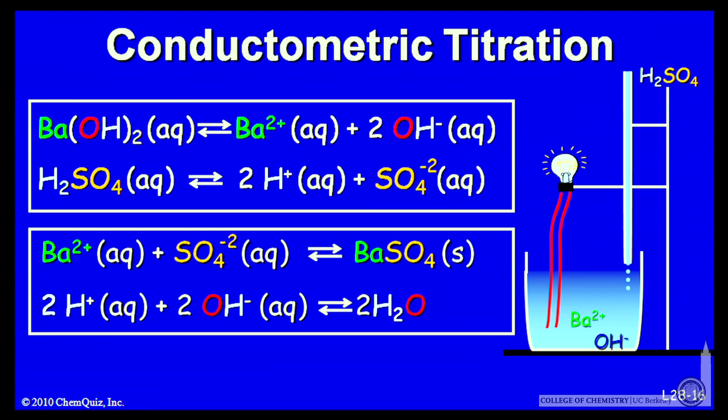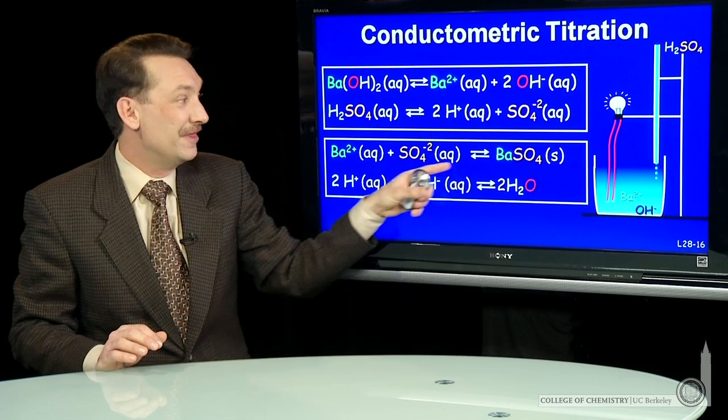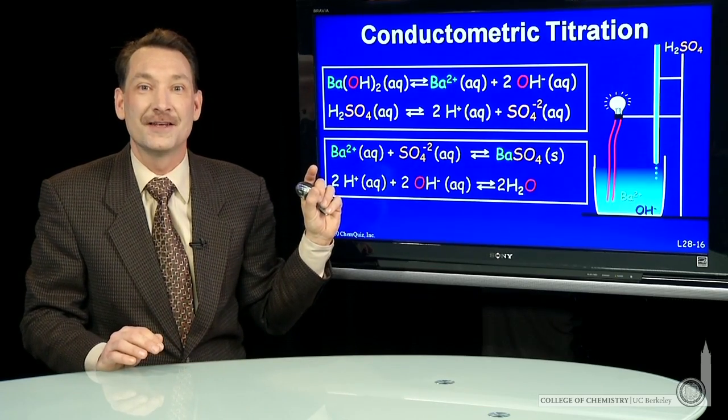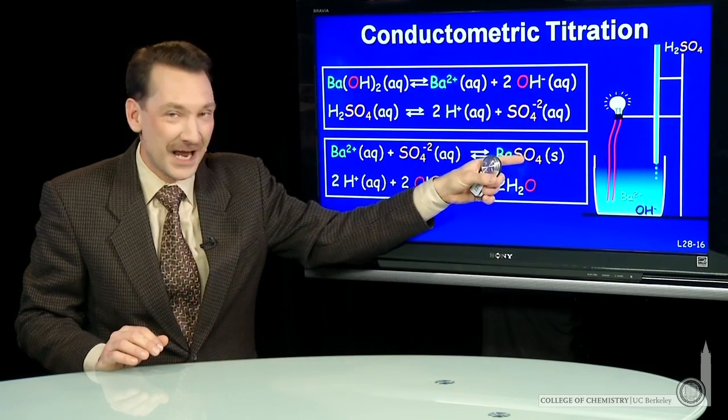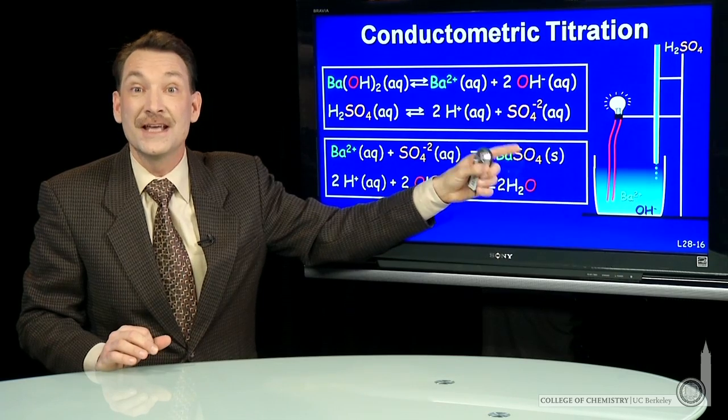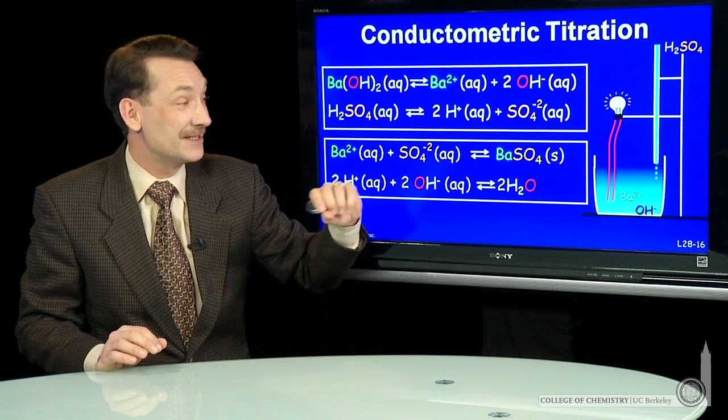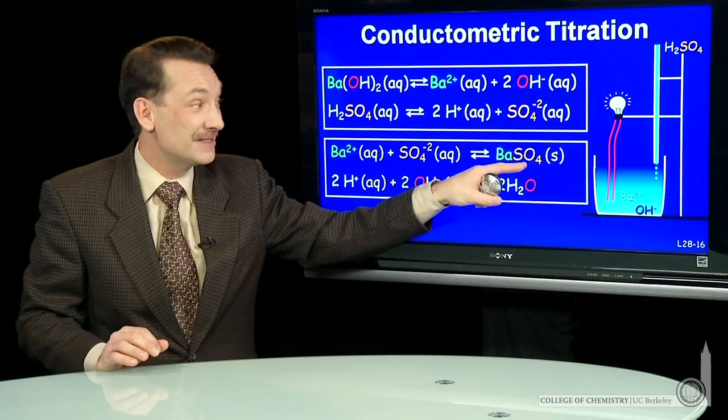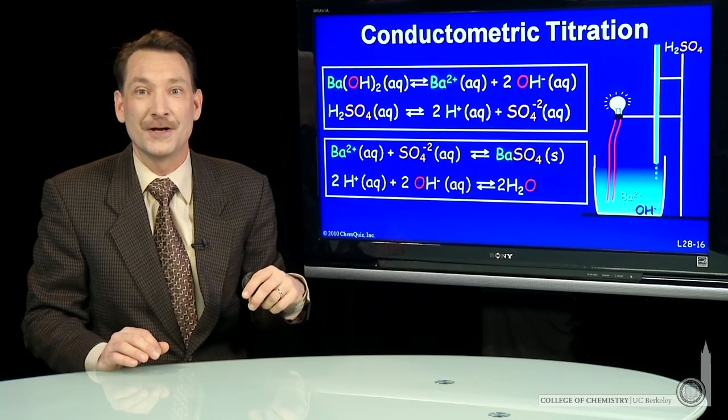And here I've written the reverse of the dissolution reaction. So the K going this way, barium dissolving, is 10 to the minus 10. So the K for this reaction, the reverse, is 1 over 10 to the minus 10, or 10 to the plus 10. A large K means I strongly favor the barium sulfate solid.